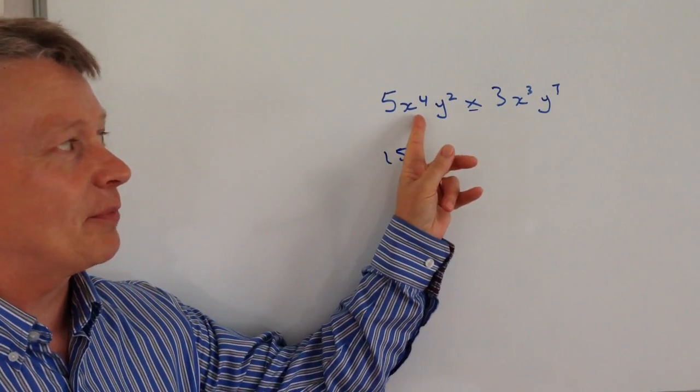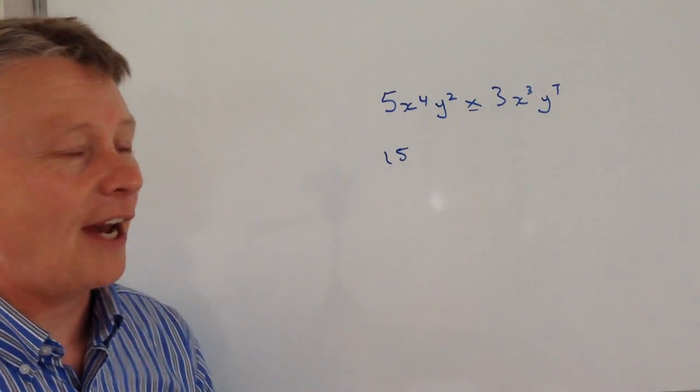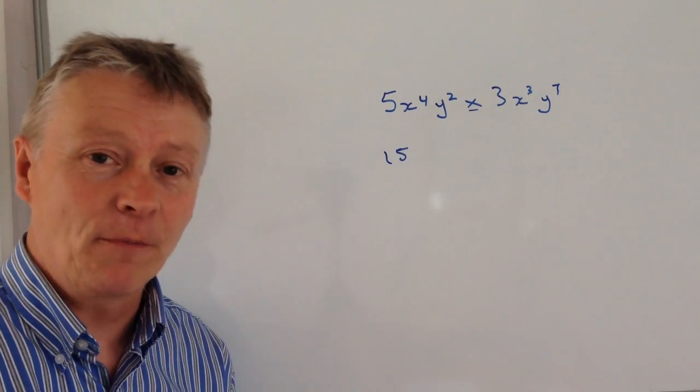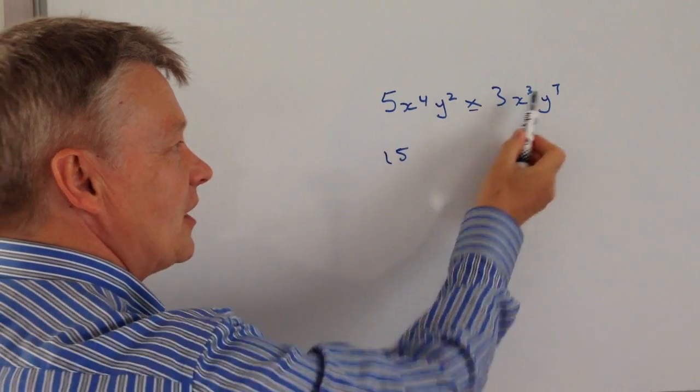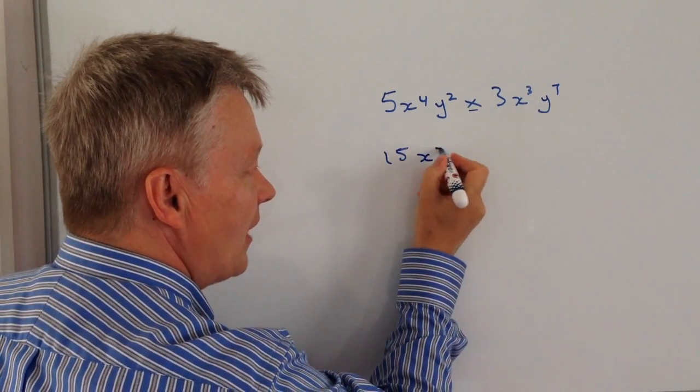and then we've got x to the power of four times x to the power of three. Well you need to remember laws of indices, we add these indices together so it becomes x to the seven.